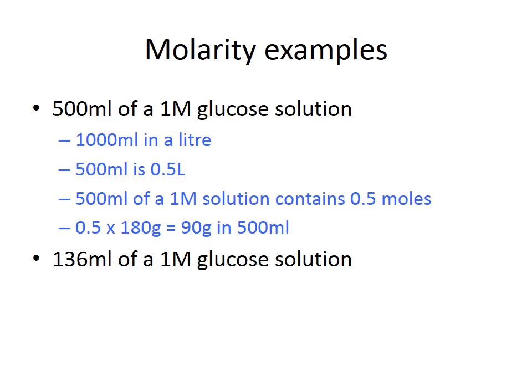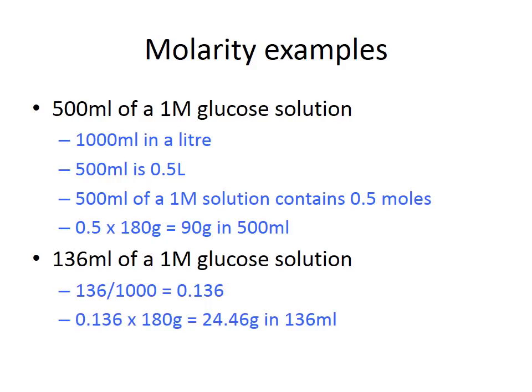In a slightly more complicated example, if you need 136 mL of a 1 M glucose solution, you first calculate the number of moles required. Divide 136 by 1000 to convert to litres — giving 0.136 moles. Multiplying 0.136 by the molecular mass of glucose (180) tells you that you need 24.46 g of glucose dissolved in 136 mL to produce a 1 M solution.